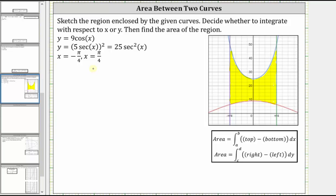So I've already graphed the bounded region on the right. Our goal here is to find the area of the shaded region, which notice is bounded above by y equals 25 secant squared x and below by y equals 9 cosine x. So because the area is bounded above and below by two functions of x, we will integrate from left to right or with respect to x, which means the area is equal to the definite integral from a to b of the top function minus the bottom function integrated with respect to x.